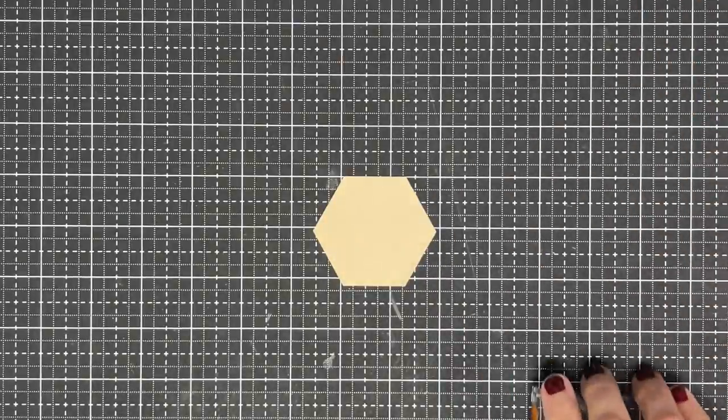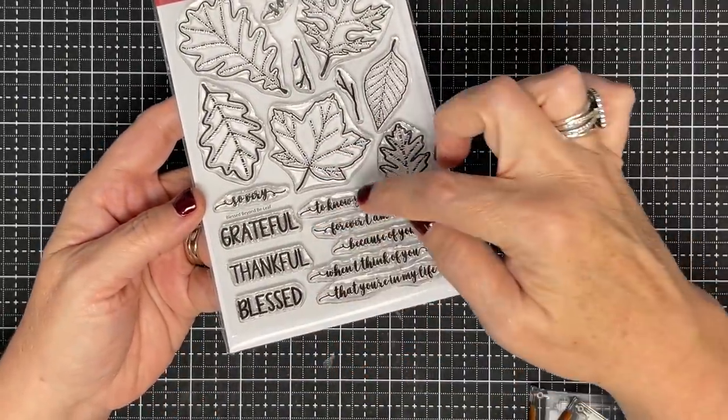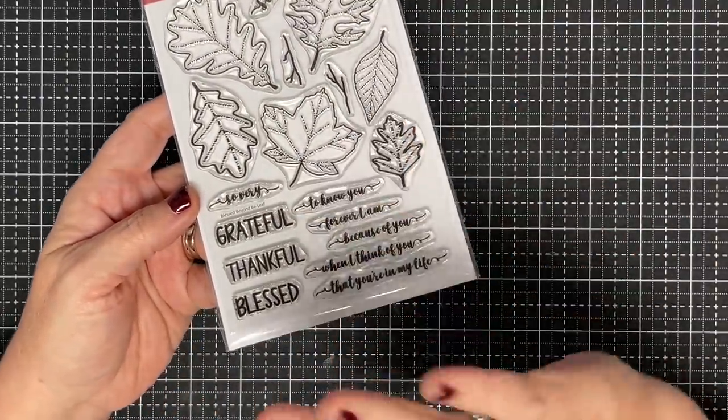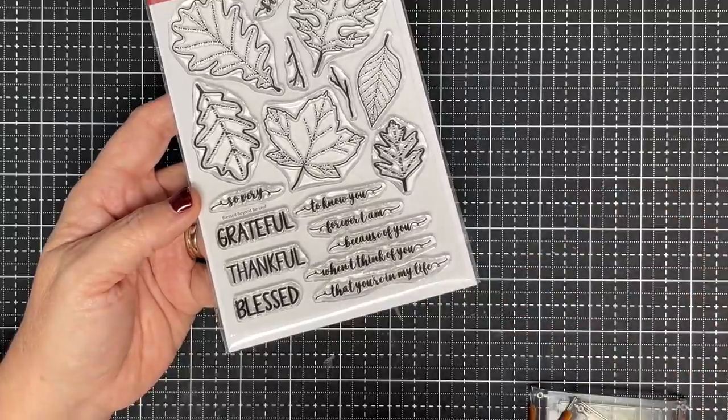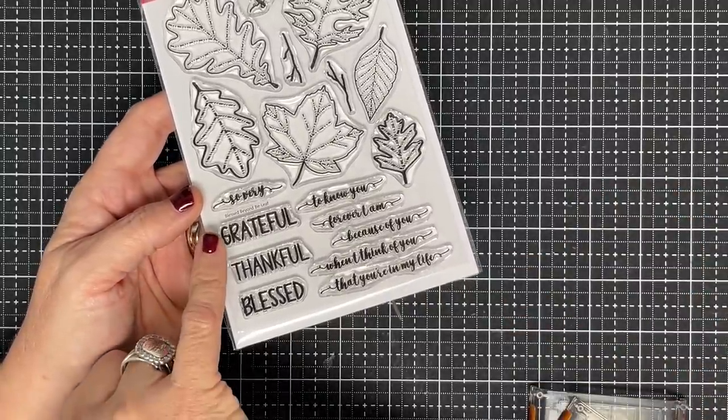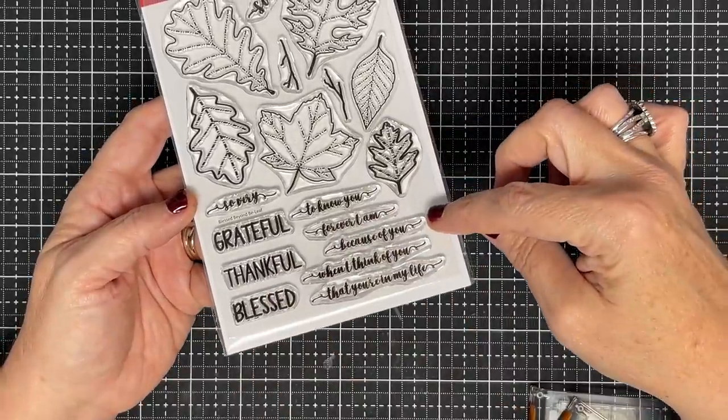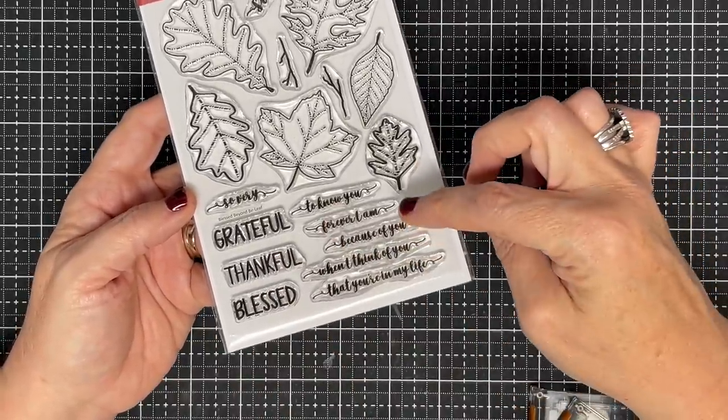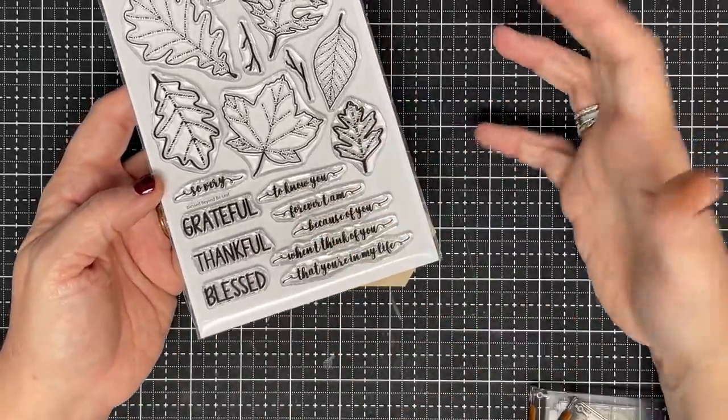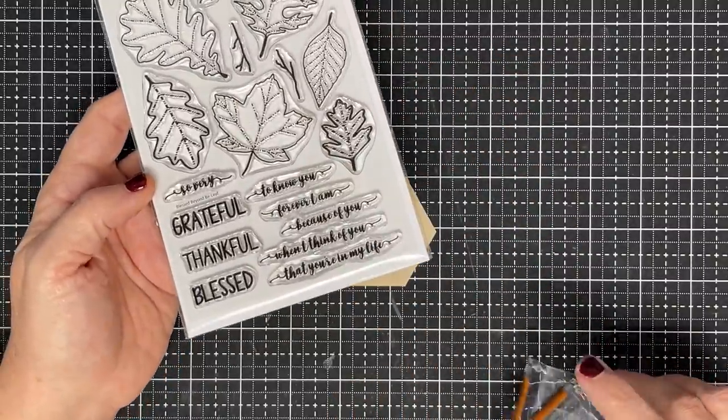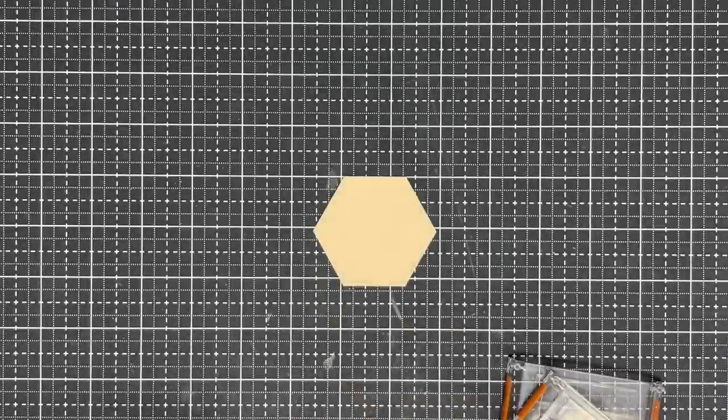From this stamp set, you're able to take the words grateful, thankful, and blessed and mix our sentiments with it. This works perfect. For the one I made earlier, I did grateful to know you. I thought that'd be cute at the table when somebody sits down. For the one we're doing today, we're going to do thankful for you.